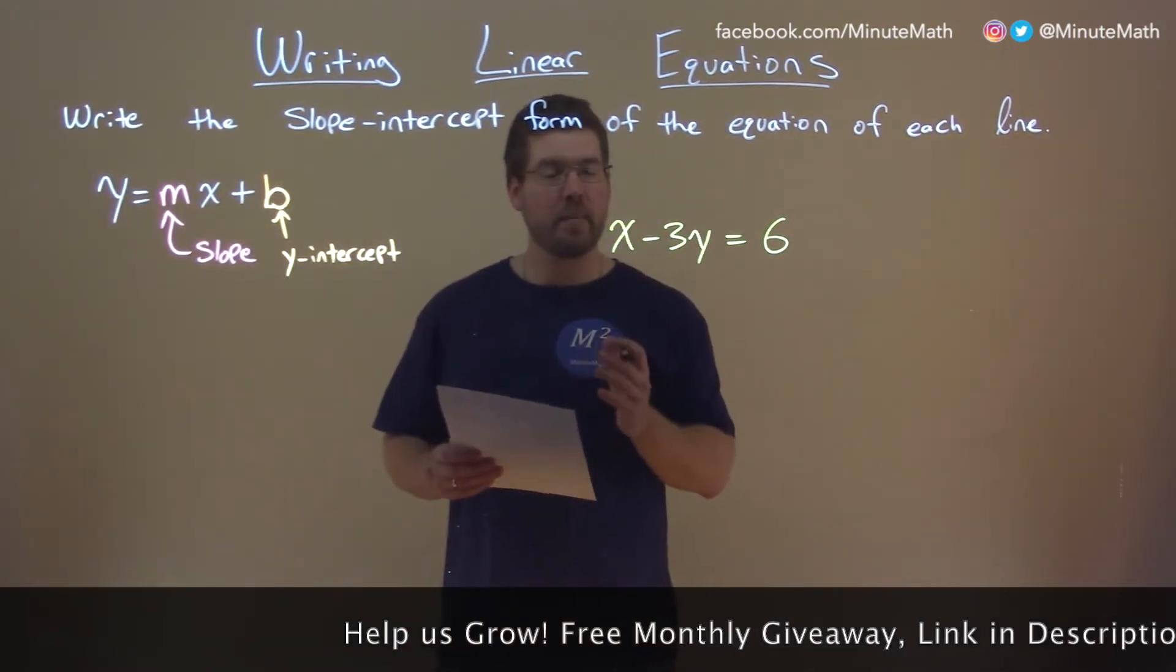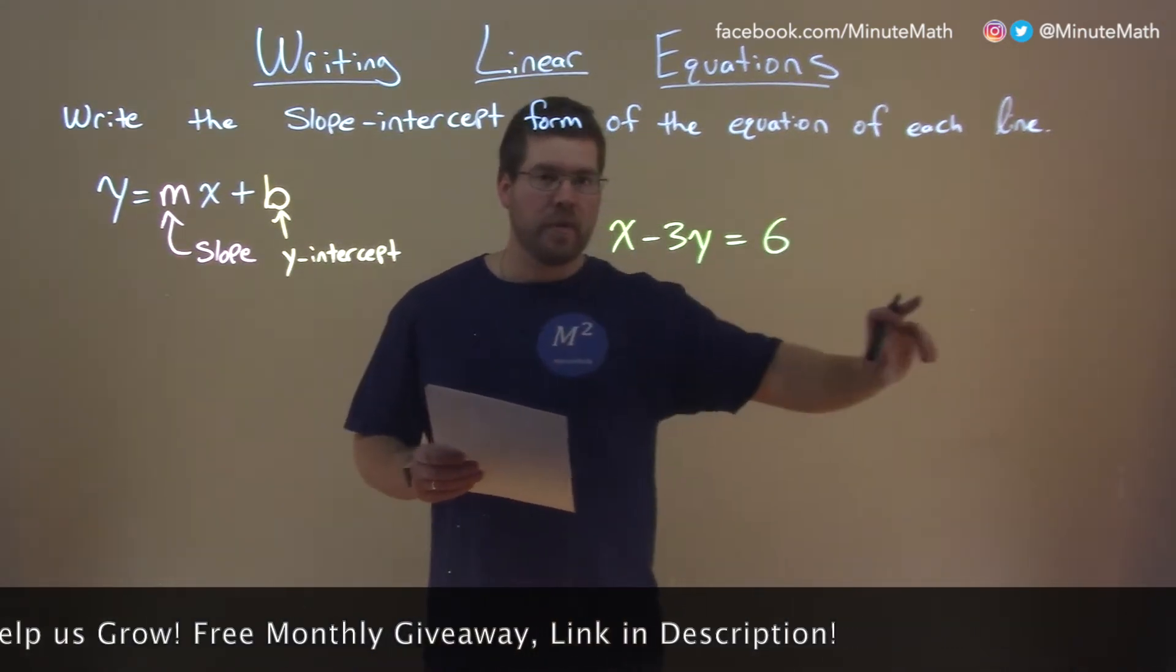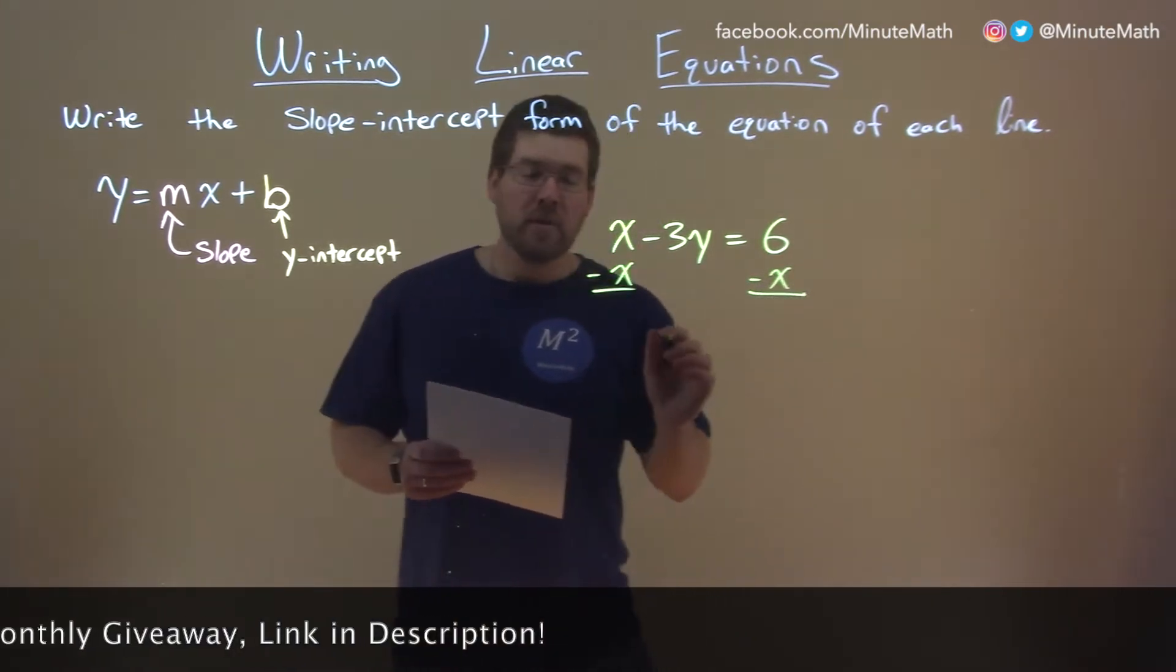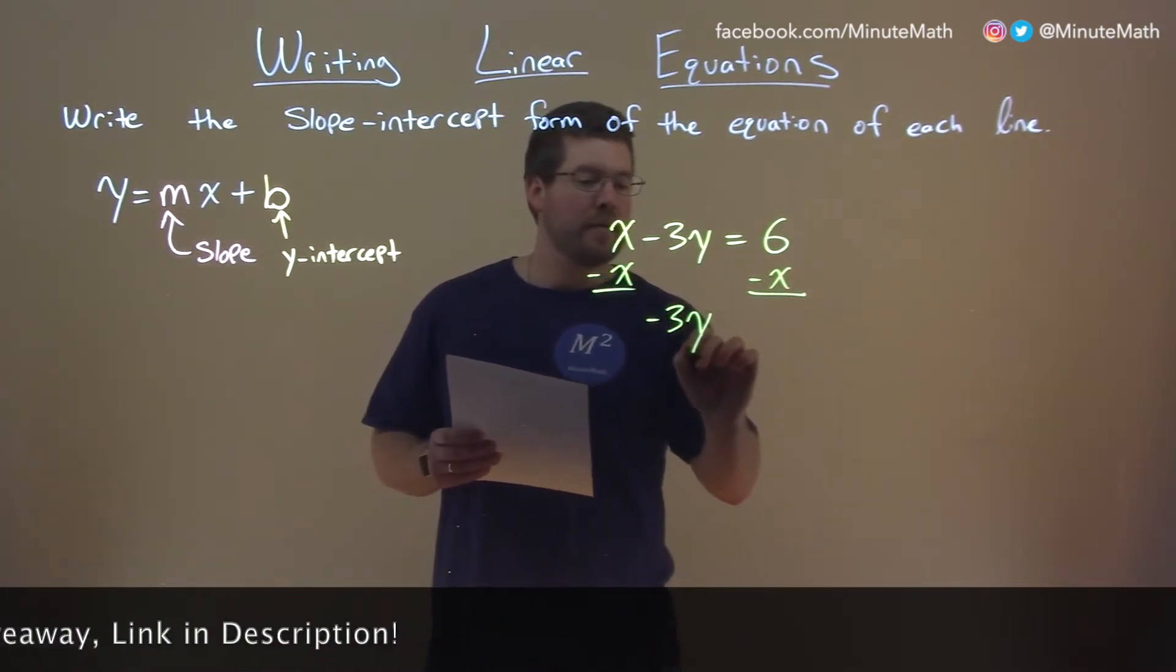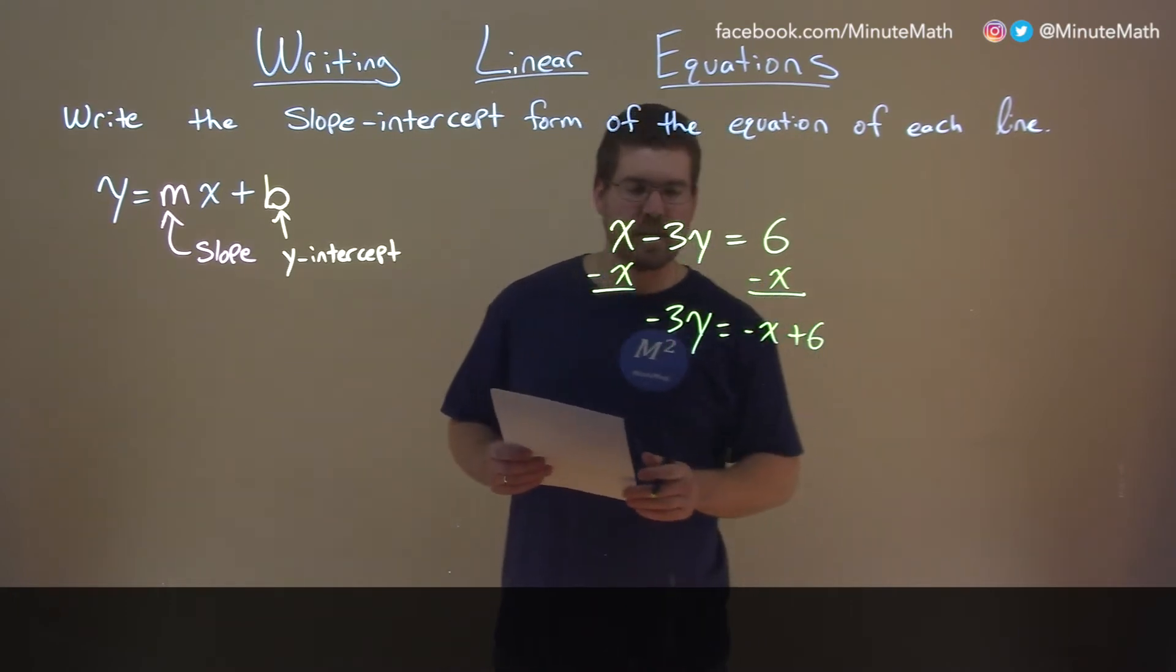First thing to think about: get y by itself. To do that, we have an x here. Let's bring the x over, subtract an x to both sides, and we're left with negative 3y equals—let's write the negative x first—negative x, now it's a positive 6, plus 6 there.